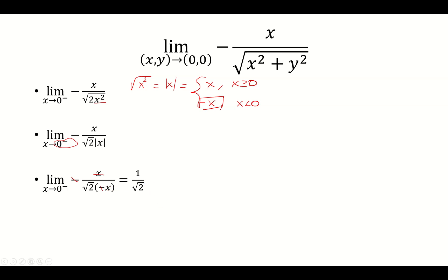So what we did was we took two different paths, found two different limits, and so the limit does not exist.